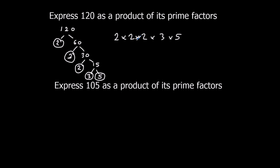So that is 120 as a product of its prime factors. We can also write this as 2 cubed times 3 times 5, because 2 times 2 times 2 makes 2 cubed.